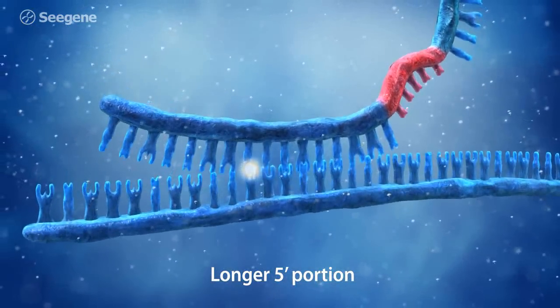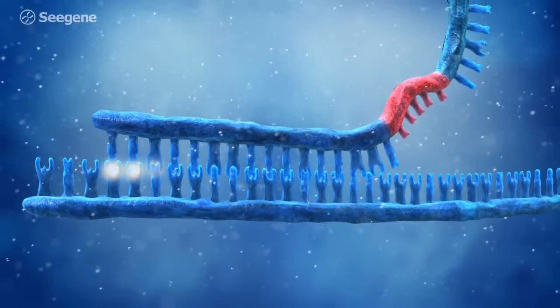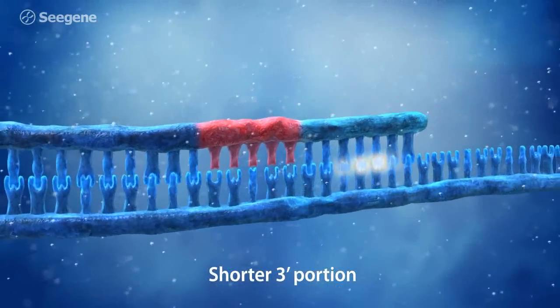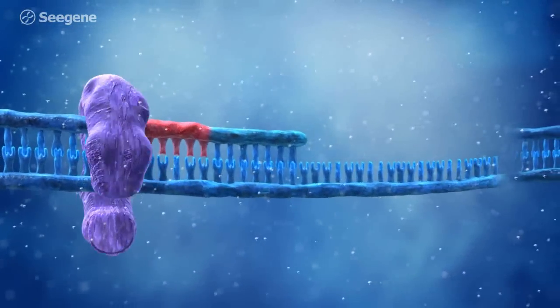In contrast, the 3' portion under normal PCR cycling conditions cannot bind to the template DNA by itself. The 3' portion works as a determiner of specificity. Its binding is required for elongation of the DPO primer.